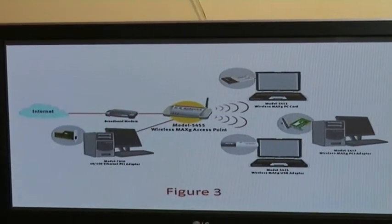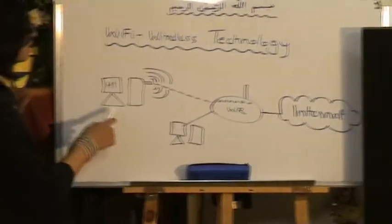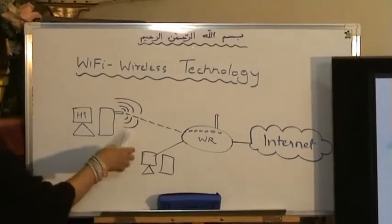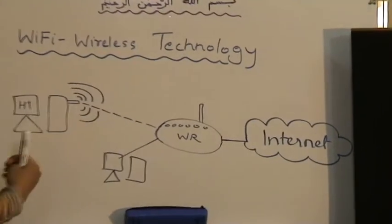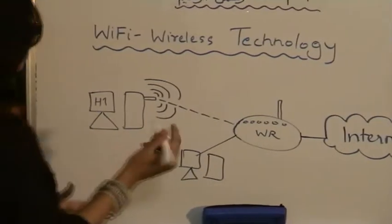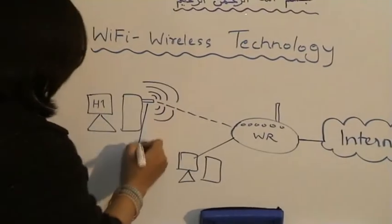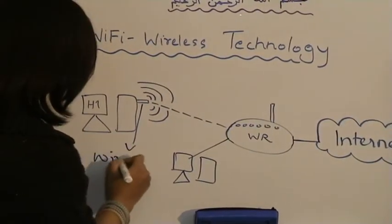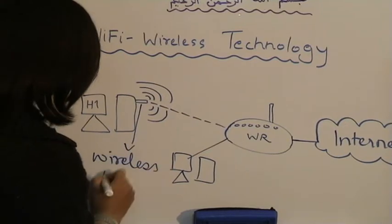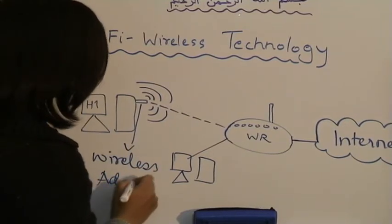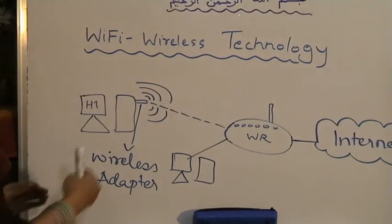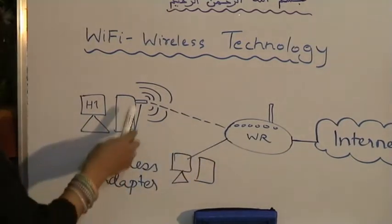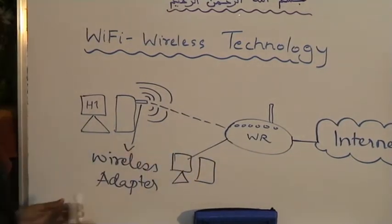Now, if a computer wants to connect to something wirelessly — in this case a wireless router — it needs to have a device connected to it. That's where this device comes in. It's known as a wireless adapter. What it does is it helps the computer connect to something wirelessly.